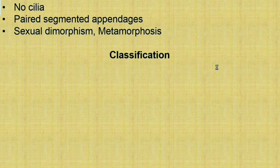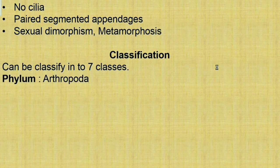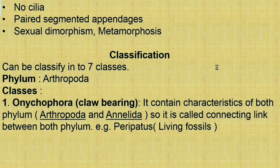Arthropoda can be divided into seven classes. The first is Onycophora — the claw-bearing animals. It contains characteristics of both Phylum Arthropoda and Phylum Annelida, so it is called the connecting link between both phyla. For example, Peripatus, which is a living fossil.